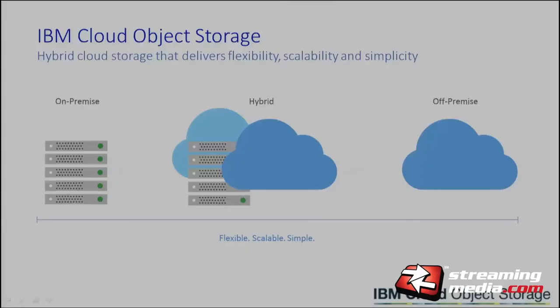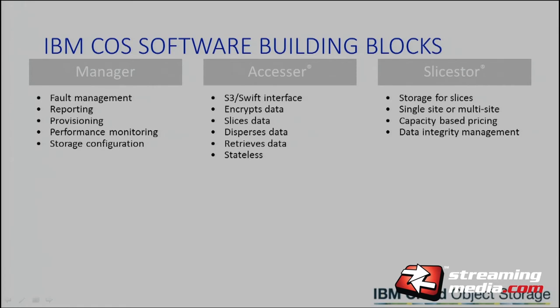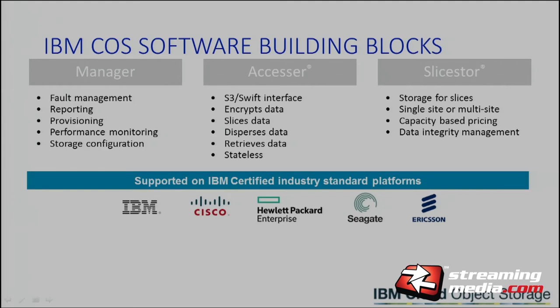We offer on-premises, hybrid, and off-premises cloud deployments. If you look at the building blocks, we've got three parts: a manager that does all the software definition, an accessor that does the actual slicing and dicing of your data, and slice stores — the actual JBOD storage for the system. You can have a deal with, say, Hewlett-Packard or Seagate, buy the hardware from them, and we'll supply the software — or you can buy the whole thing from us, signed, sealed, and delivered.